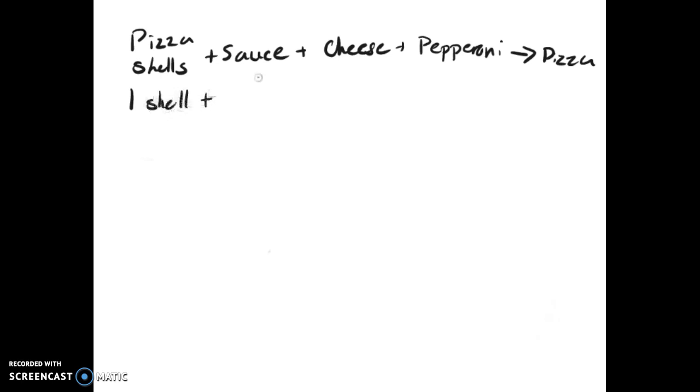So in order to make this, the recipe looks sort of like this: one shell, say half a cup of sauce, two cups of cheese because you're just going to use the whole package, and give or take 30 slices of pepperoni depending on how many you eat and how many are in the package to begin with.